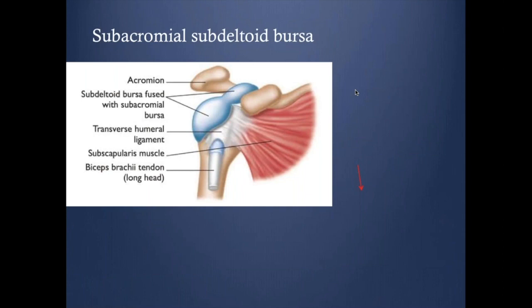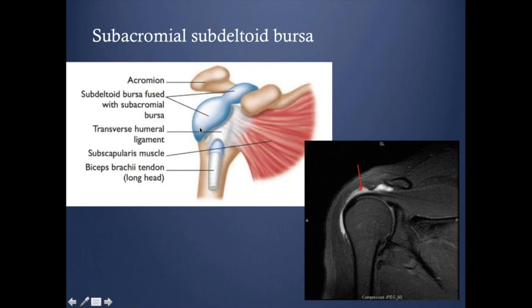The sub-acromial sub-deltoid bursa is a large bursa extending from inferior to the acromion and inferior to the deltoid muscle, going all the way laterally. It can present as an isolated pathology — as seen here, the tendon looks fine with normal morphology and normal signal, but there is fluid within the bursa. This is how the bursa looks.